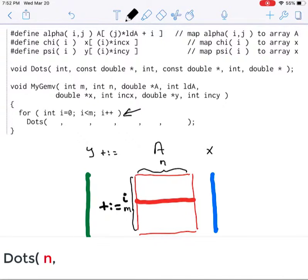Next, you need to determine the address where the first vector that's part of the dot product starts. Let's see where that is. It's this element right here.